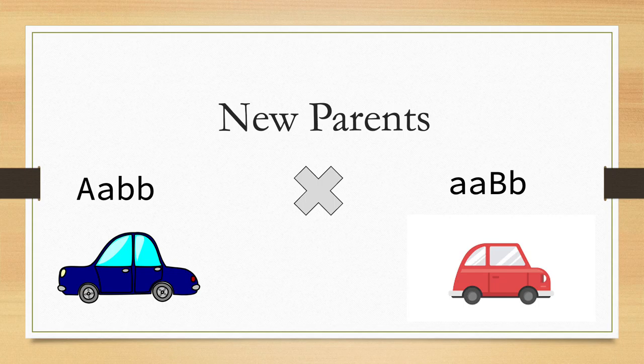Let's look at two different parents to determine what their offspring are. Parent one is a blue four-door sedan with cloth seats. Parent two is a red two-door car with leather seats.